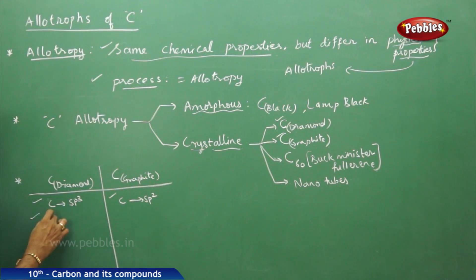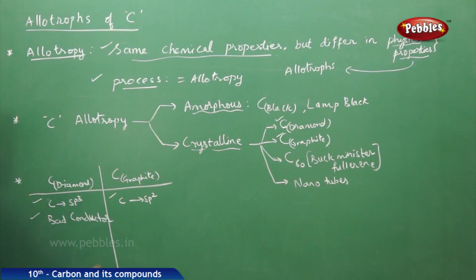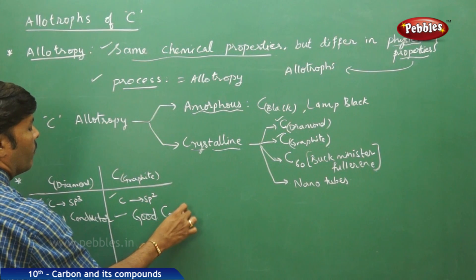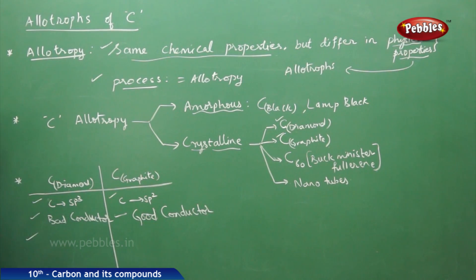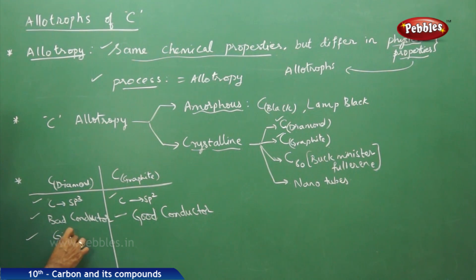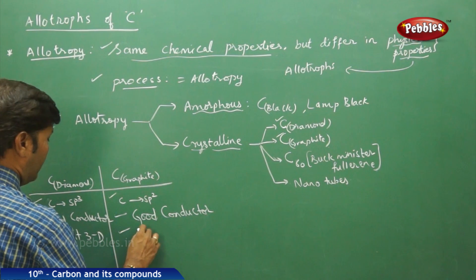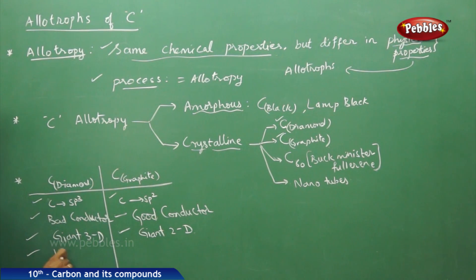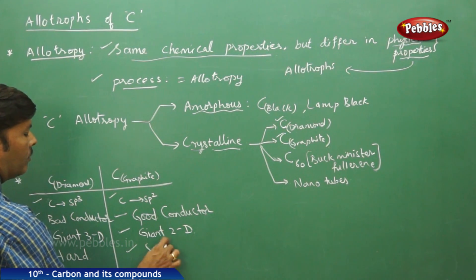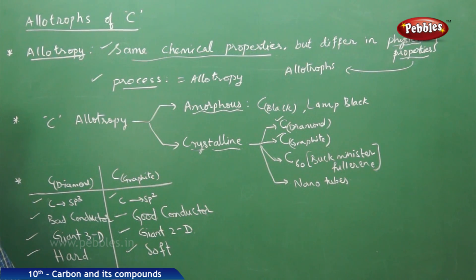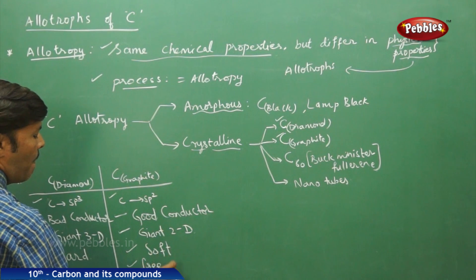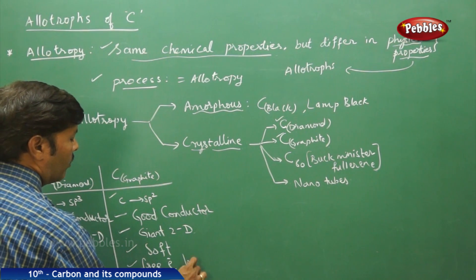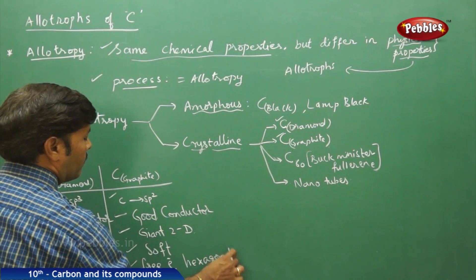Diamond is a bad conductor whereas graphite is a good conductor. Diamond has a giant 3-dimensional structure whereas graphite is giant 2-dimensional. Diamond is hard and graphite is soft. Graphite is soft because it contains free electrons, and its shape has hexagonal rings.